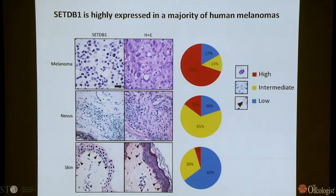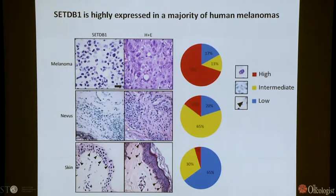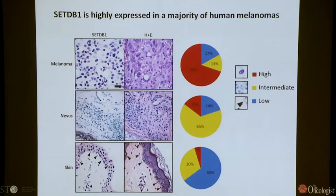They looked at a variety of human tissues and focused on melanoma. The majority of normal skin has very low expression of SETDB1. Nevi or pigmented moles show intermediate levels of SETDB1. And as you get into aggressive melanoma, virtually all show either high or intermediate SETDB1 expression. So SETDB1 clearly correlates with the malignancy of the disease, which aligns with the amplification data.